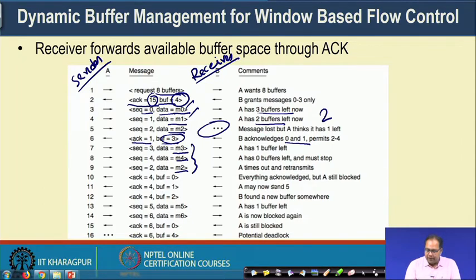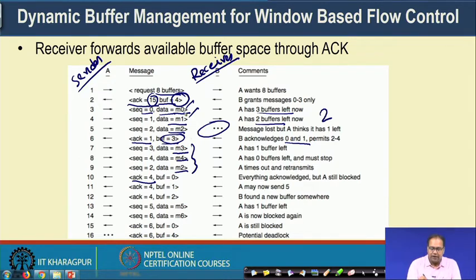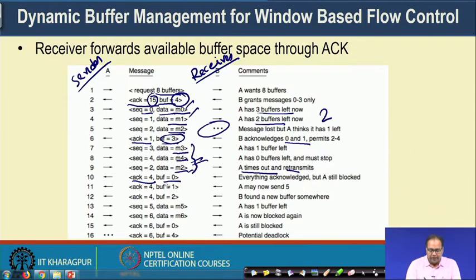B sends acknowledgement number 4, which as a cumulative acknowledgement confirms M2, M3, and M4 were received. There was a timeout for M2 which had not been acknowledged, so A retransmits it. B has now received M2, M3, and M4, so it sends acknowledgement 4 with buffer space 0, meaning all messages were received but the application has not yet read the data.